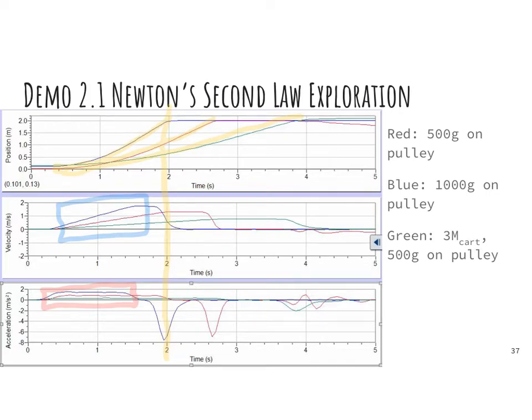Now, the different lines on this graph, as we'll see when I recreate the demonstration in class, correspond to different setups. For example, the red line, which is right in the middle, there's 500 grams of mass sitting on the pulley that's causing it to accelerate. We'll kind of use that as our baseline. We have this hanging mass, and it causes the car to accelerate.